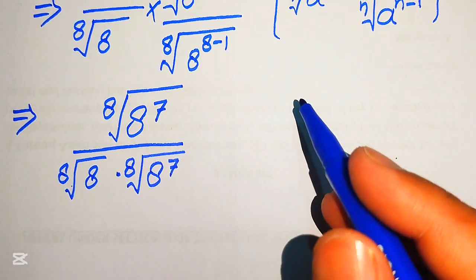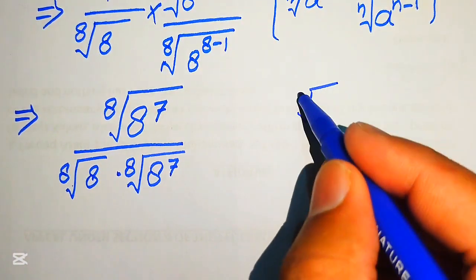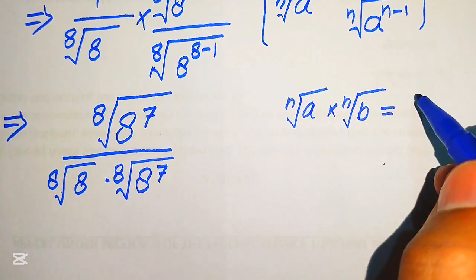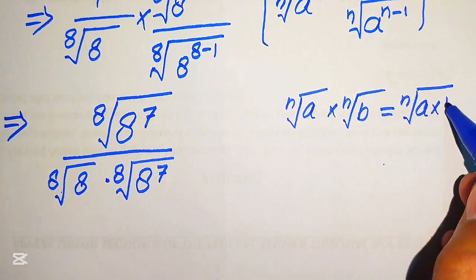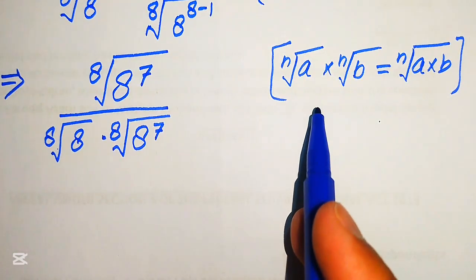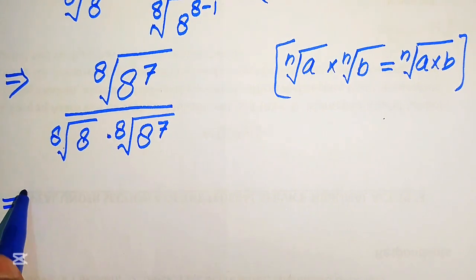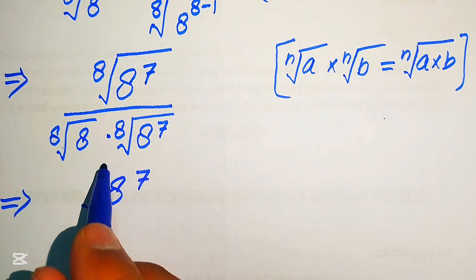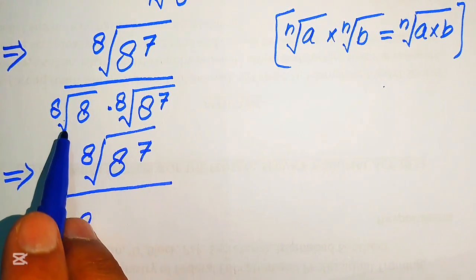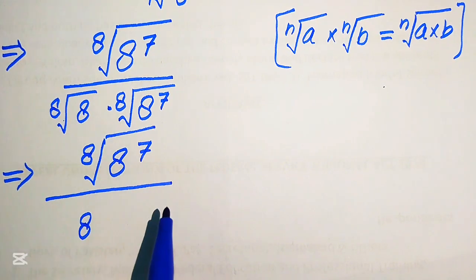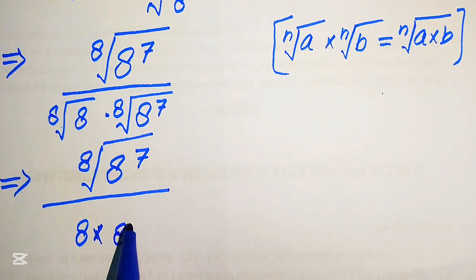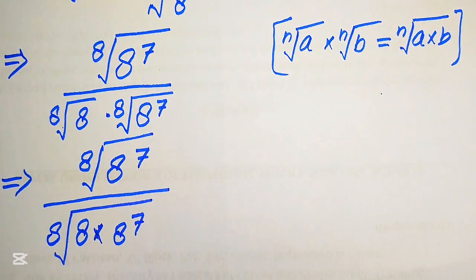We apply another exponent law: if we have the nth root of a multiplied by the nth root of b, we can combine them into the nth root of a times b. According to this rule, we combine the 8th roots in the denominator. Since the exponents on both values are the same, we combine the exponents and write: the 8th root of 8 to the power of 7, divided by the 8th root of 8 multiplied by 8 to the power of 7.